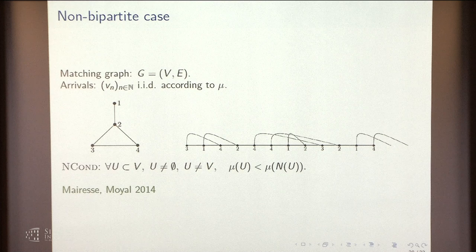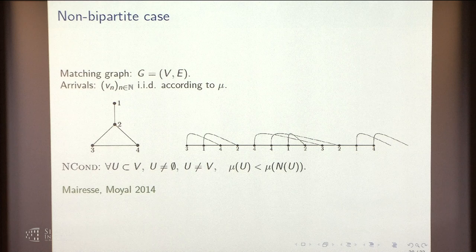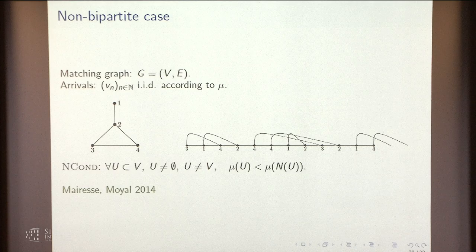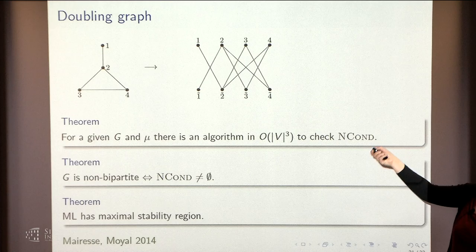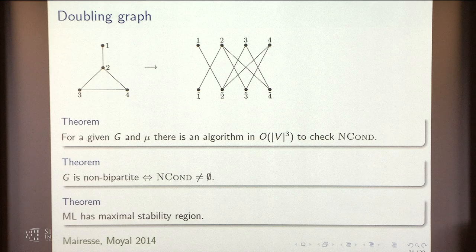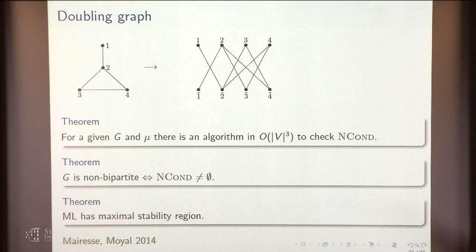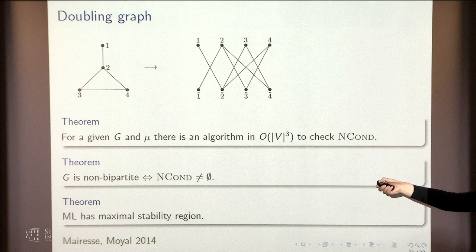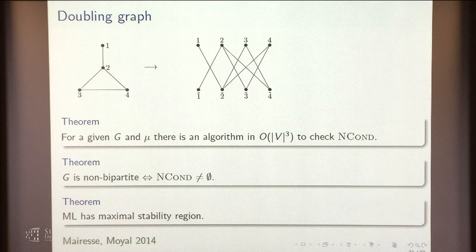Regarding links between non-bipartite and bipartite variants: the non-bipartite case can be represented as a bipartite case by placing a copy of each item on the other side. Starting from this description, we can recover all results from the bipartite case for the non-bipartite case. This was done in 2014.